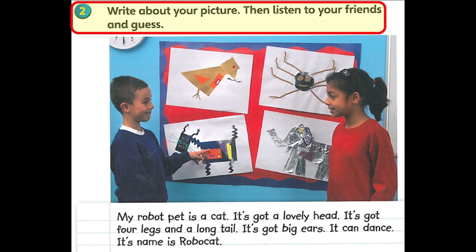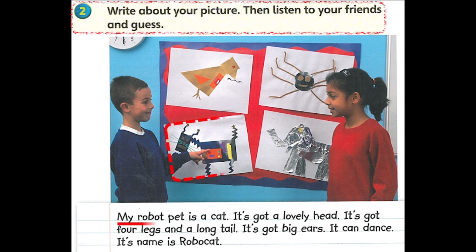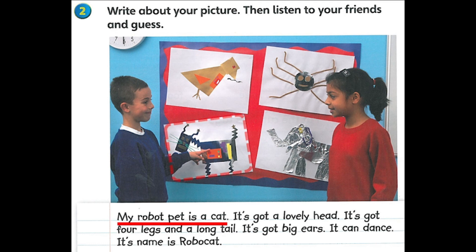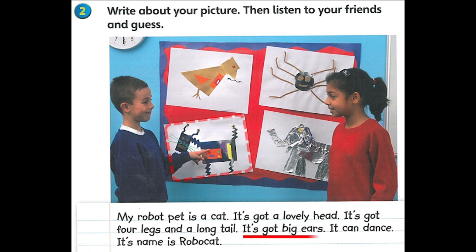2. Write about your picture, then listen to your friends and guests. My robot pet is a cat. It's got a lovely head. It's got 4 legs and a long tail. It's got big ears. It can dance. Its name is Robocat.